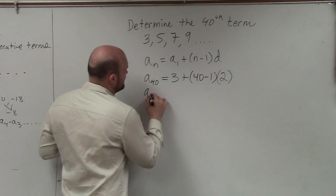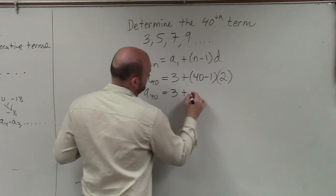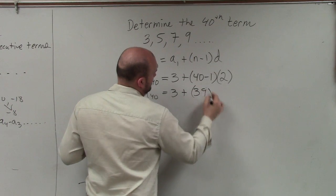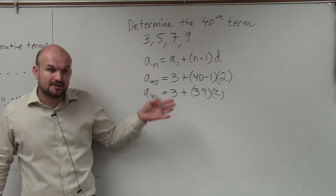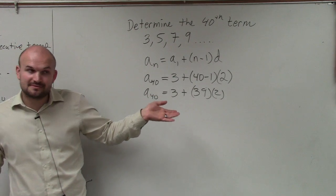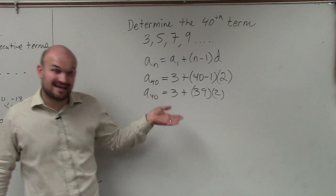I'll just do this step by step. Then we have to make sure we multiply before we add. So 39 times 2 is going to be 78.